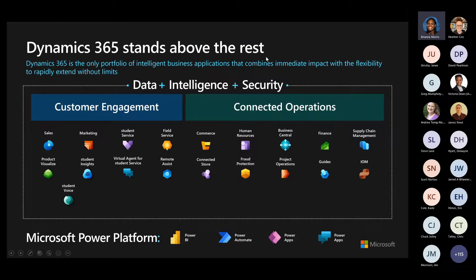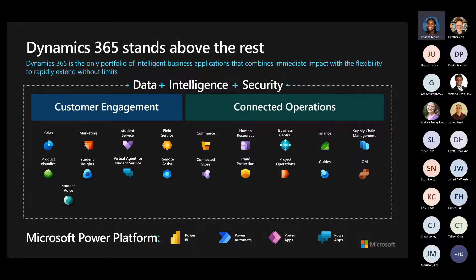When we think about Dynamics 365 and Power Platform, we have what we consider our first-party applications, such as sales, marketing, customer service, and field service — prepackaged solutions that you can buy for those specific purposes. We also have our Power Platform, our low-code, no-code platform for building out enterprise applications. Leveraging first-party applications in conjunction with the Microsoft Power Platform gives you the ability to fill gaps within your solution architecture by building more niche applications based on your specific business needs.